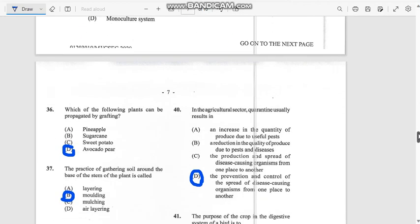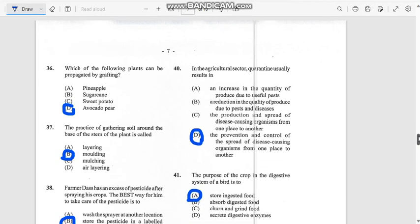Number 36: Which of the following plants can be propagated by grafting? Propagating means getting a growth of a plant and grafting means to bring off another offspring. You would have avocado. For avocado, you use the seeds, guys. For pineapple, you would use the head of the pineapple, you get what I'm saying.